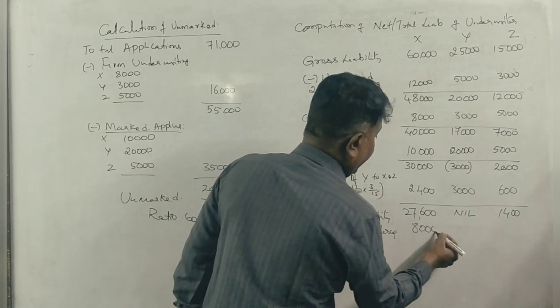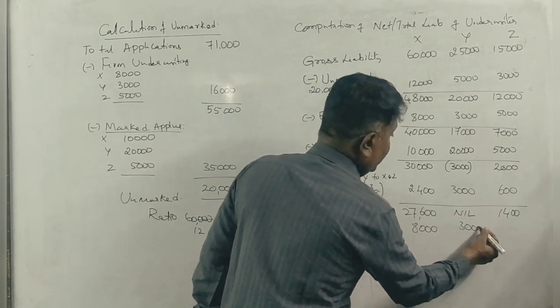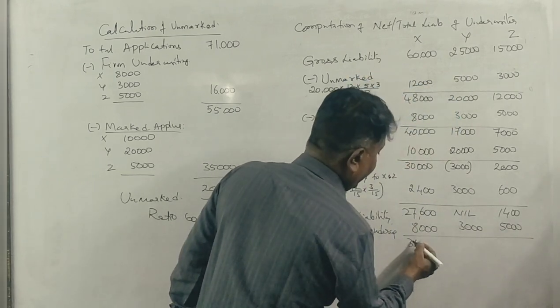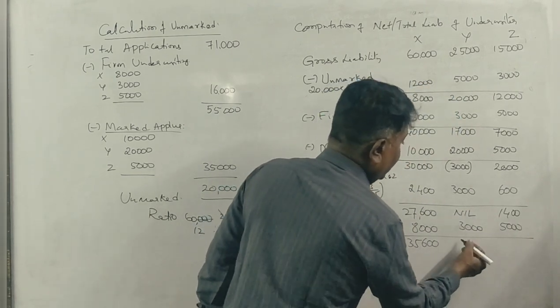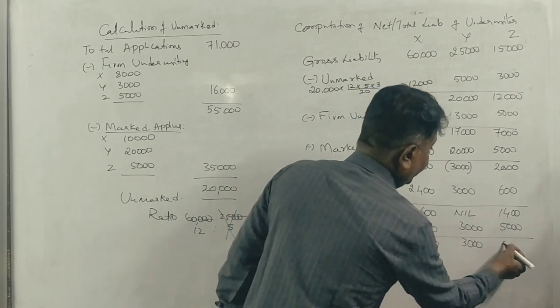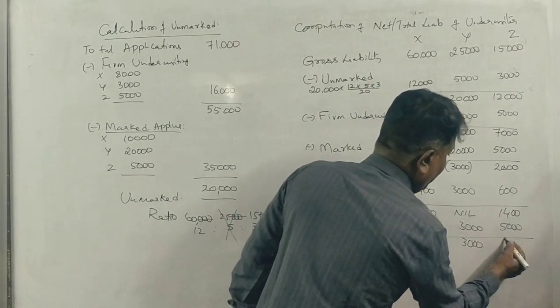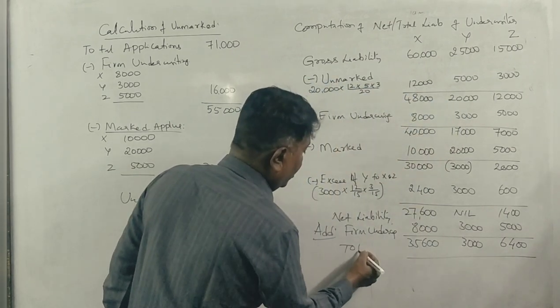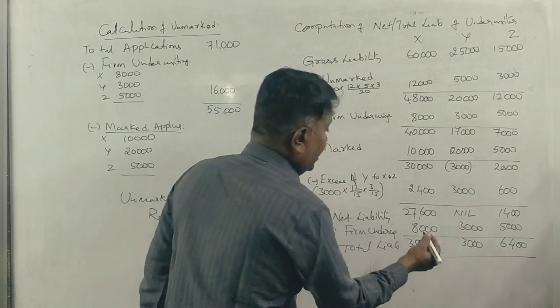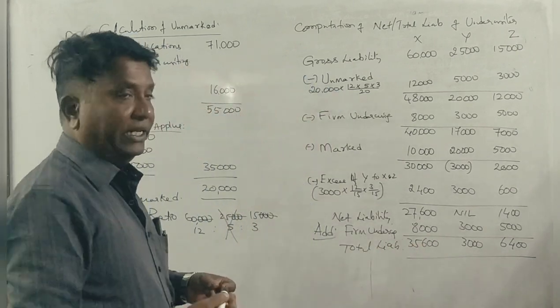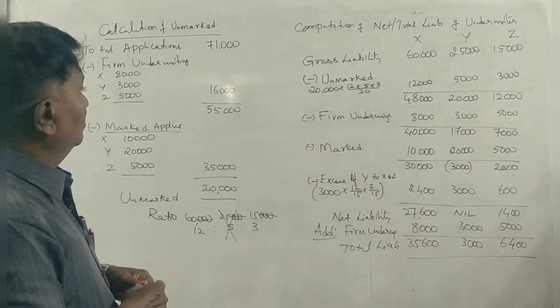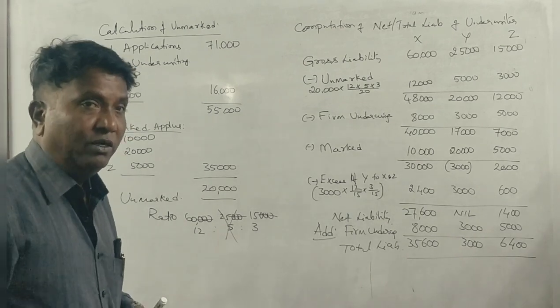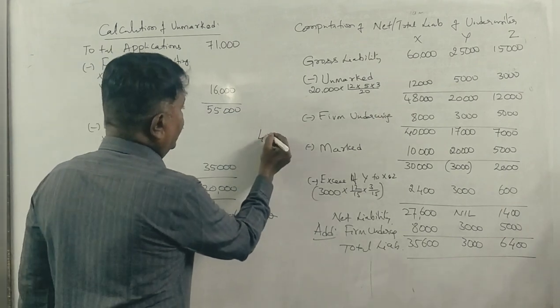Firm underwriting 8,000, 3,000, 5,000. All together 35,600, 10,400, 12,400. This is the total liability. 45,000 total.